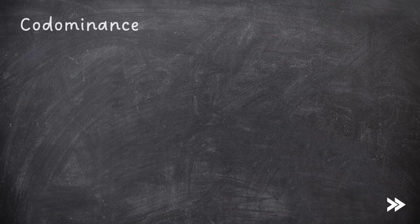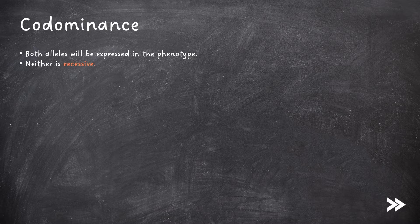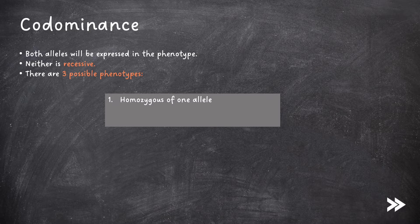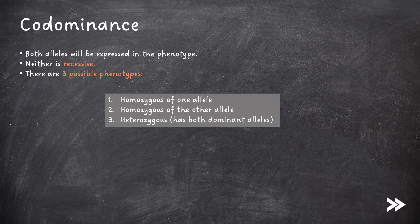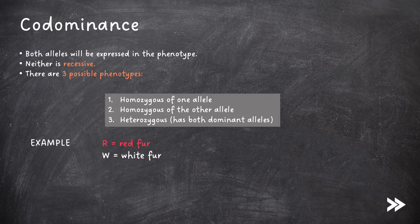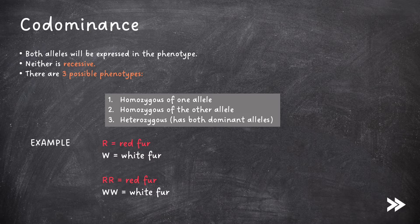Next we need to know about codominance. In codominance, both alleles will be expressed in the phenotype — neither one is recessive. There are three possible phenotypes: one caused by homozygous of one allele, one by homozygous of the other allele, and one caused by being heterozygous. For example, imagine we have two codominant alleles — uppercase R codes for red fur, uppercase W codes for white fur. Homozygous R gives red fur, homozygous W gives white fur, and heterozygous means both codominant alleles are expressed in the phenotype, resulting in pink fur.